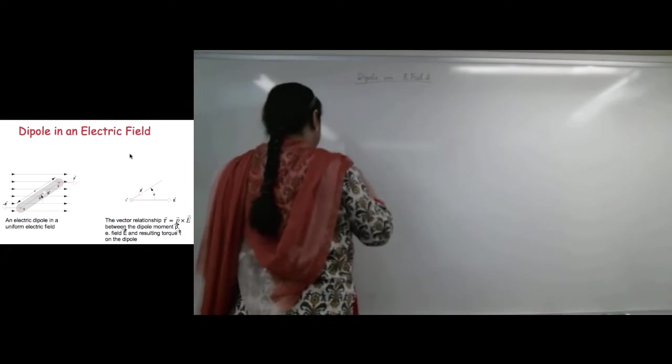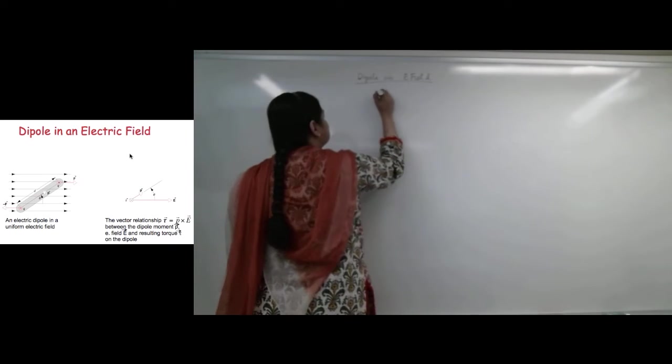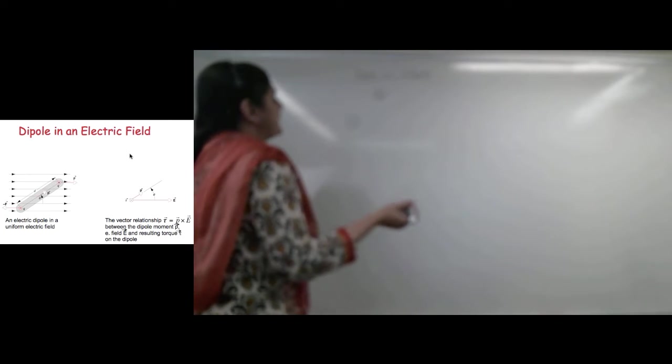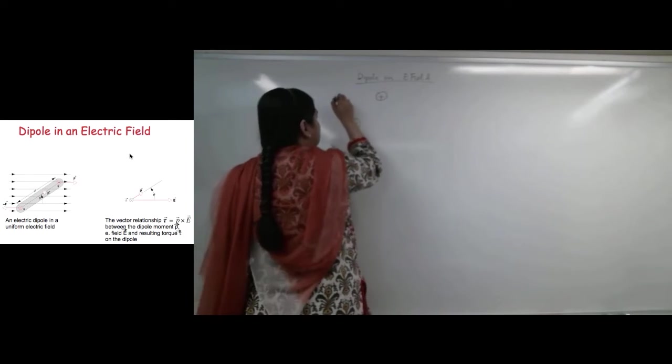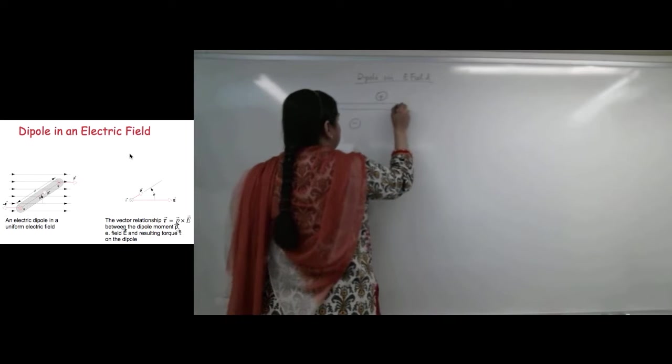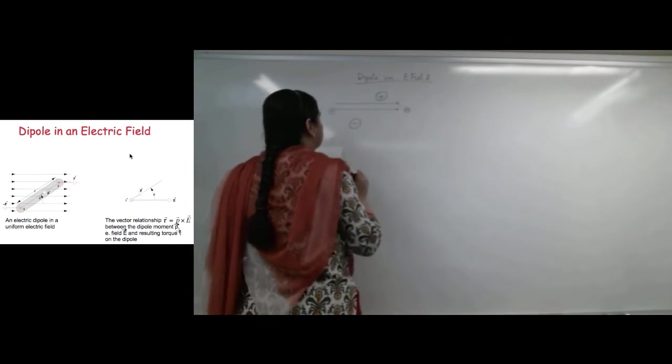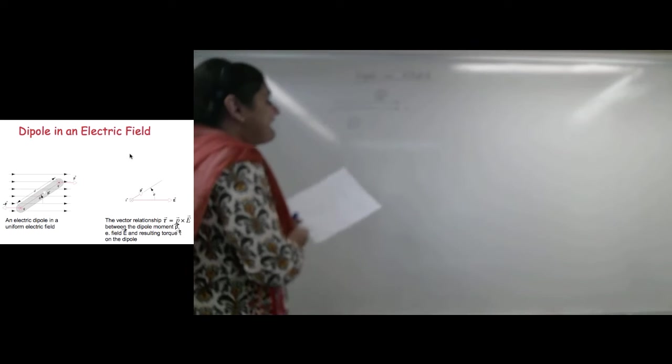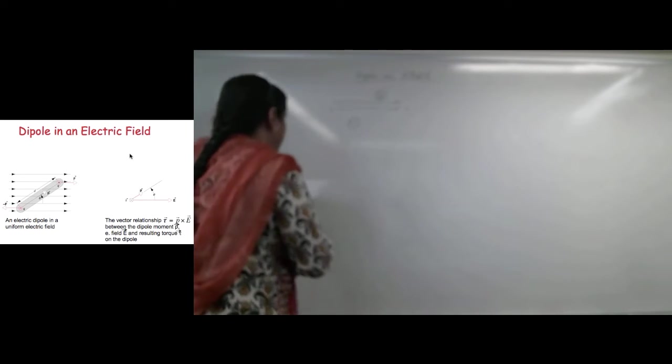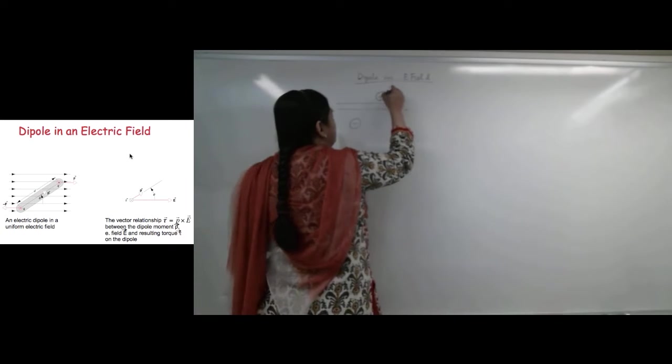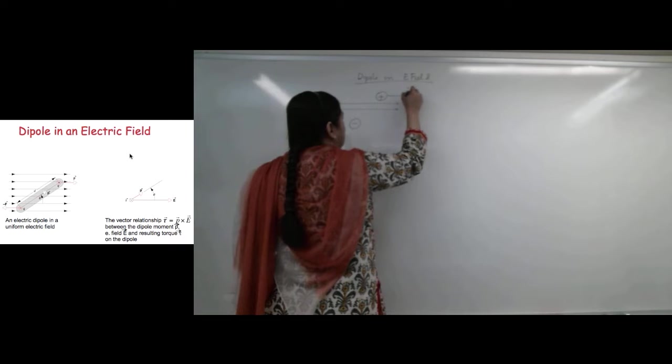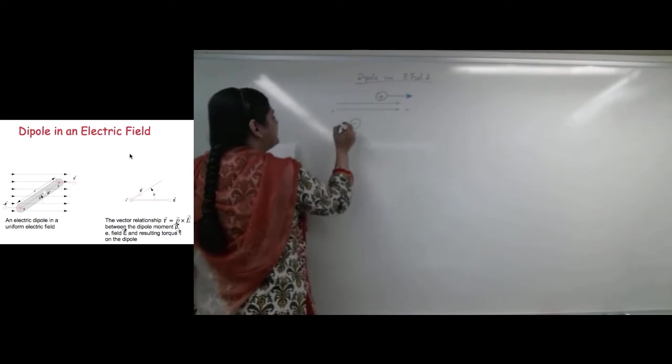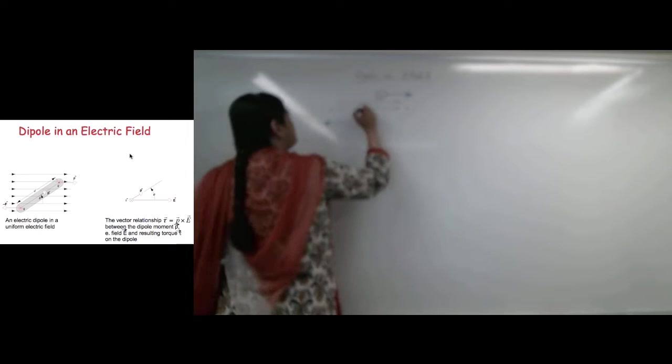So now let's talk about dipoles in electrical fields. So let's say we have a plus and a minus dipole, and it is placed in an electric field. Let's suppose that this electric field is pointing this way. So if the electric field is pointing this way, it is going to be from plus to minus. If the E field points that way, then this means the positive part of my dipole is going to be pushed that way, and the negative of my dipole is going to be pushed that way.